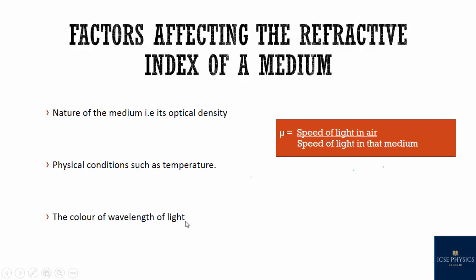Now, the effect of color or wavelength of light. The speed of light for all colors is the same in air, but in any other transparent medium, the speed of light is different for different colors. In a medium, the speed of red light is maximum and that of violet light is least. So the refractive index of a medium is maximum for violet light and least for red light. Therefore, the refractive index of a medium decreases with increase in wavelength.